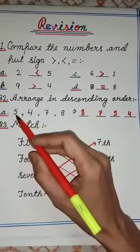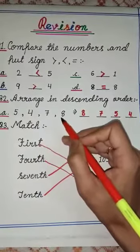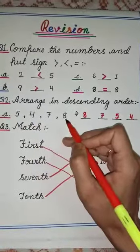So here we have numbers 5, 4, 7 and 8. So we will start from the biggest number over here. So the biggest number is 8.